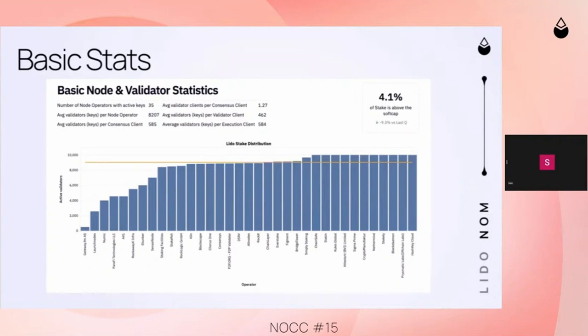As new node operators get onboarded, withdrawals and exits are prioritized to go to the node operators running below the soft cap, starting with the lowest active count first, as long as they have keys available to deposit to. A new number we're showing is the percentage of stake above the soft cap — basically the blue area above the orange line — and we're trying to get that to zero.